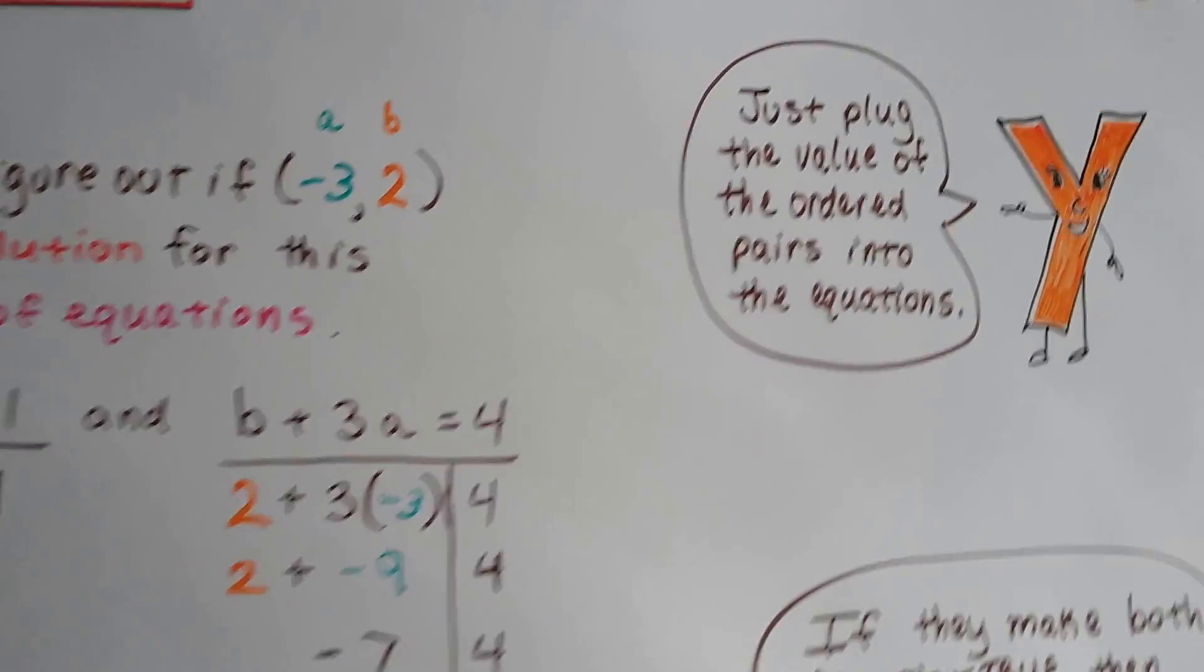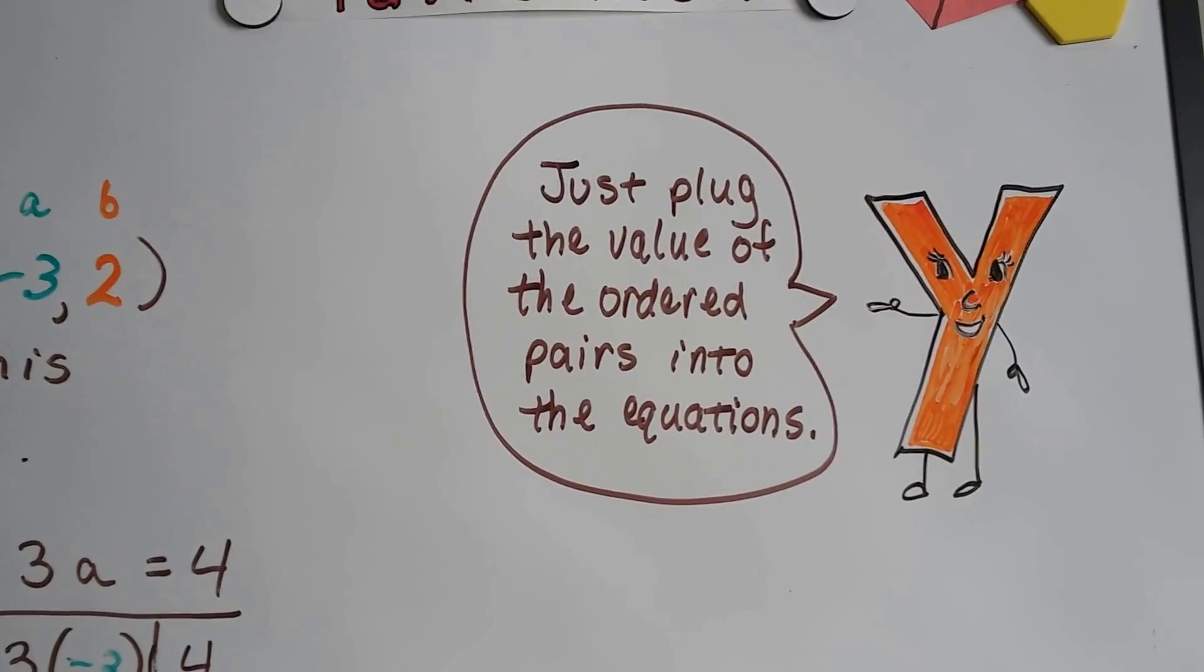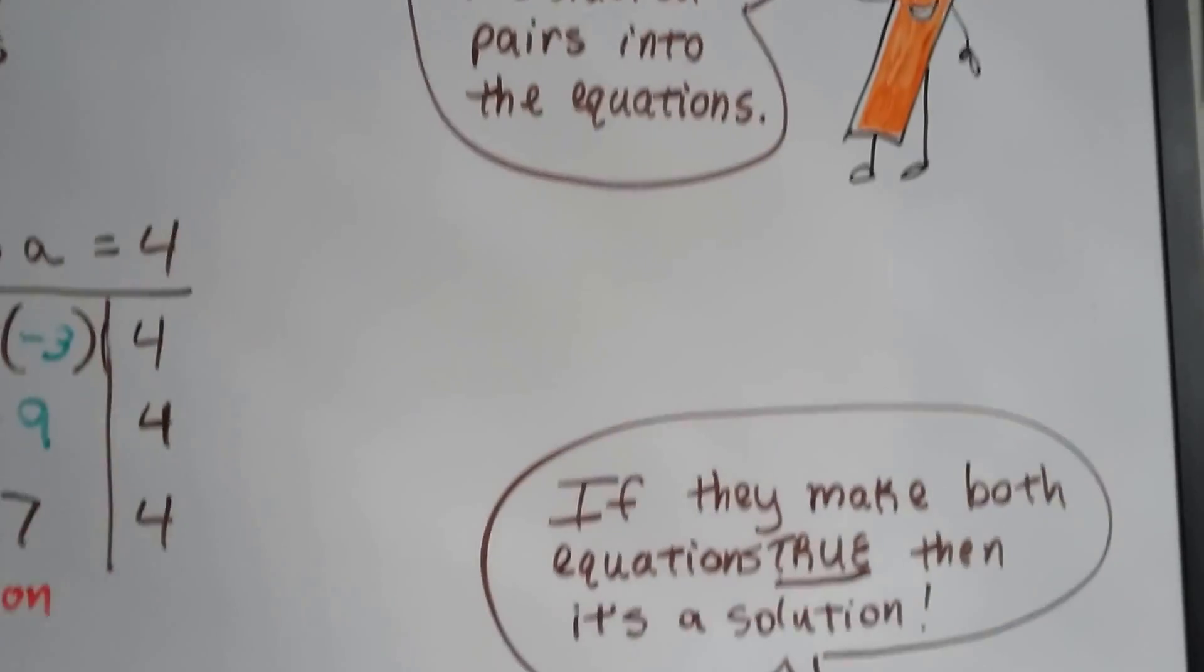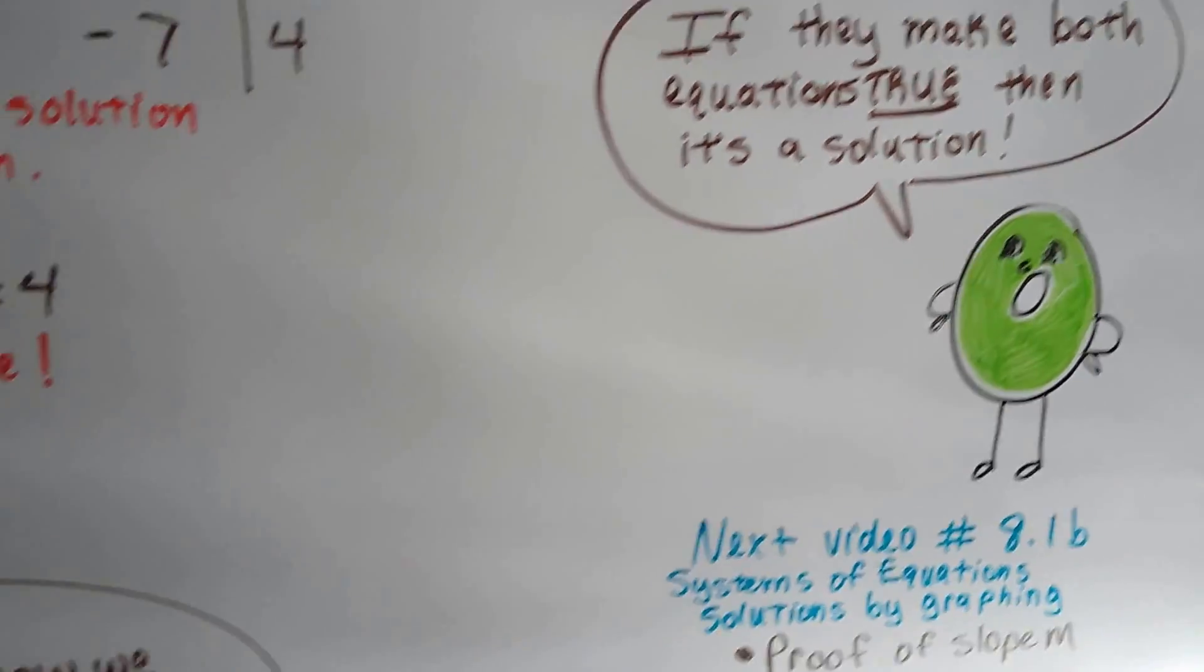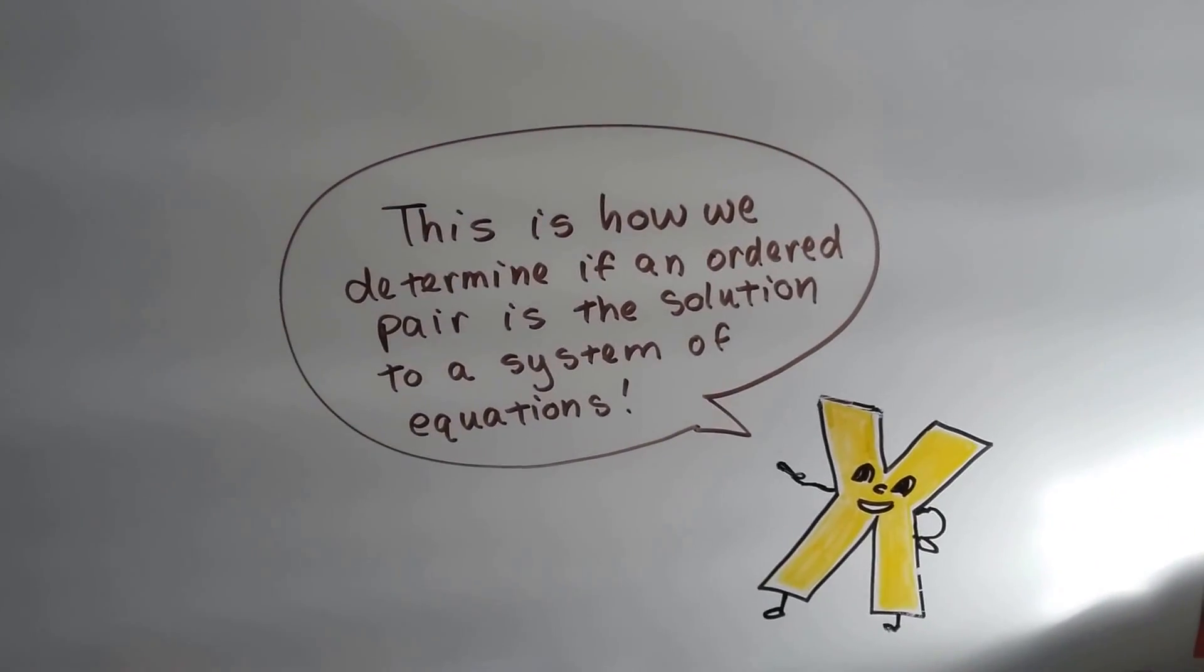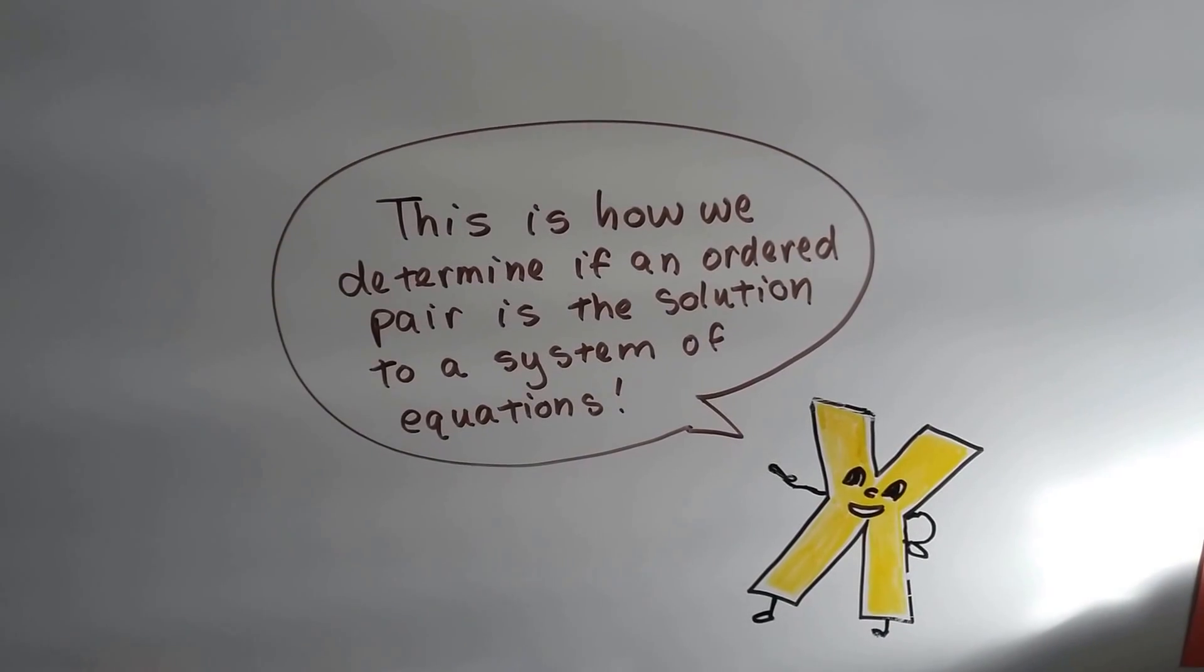So all we have to do is just plug in the value of the ordered pairs into the equations. And if they make both equations true, then it's a solution. And this is how we determine if an ordered pair is the solution to a system of equations.